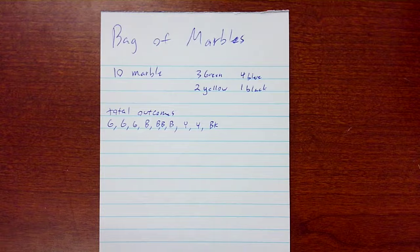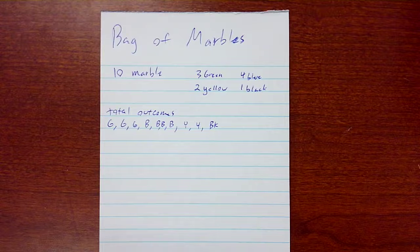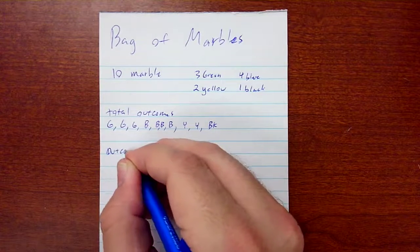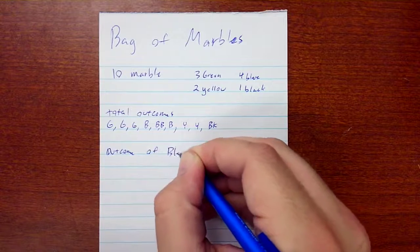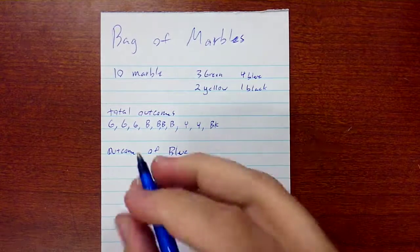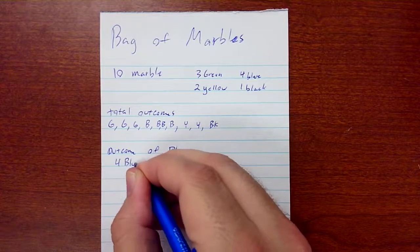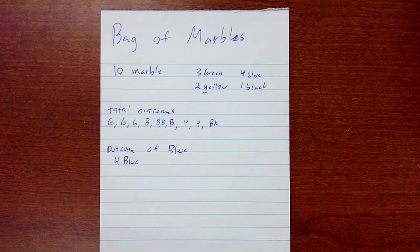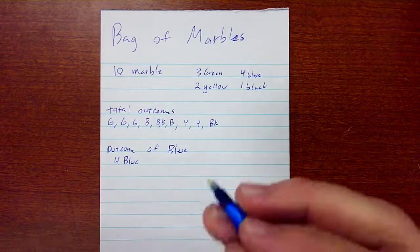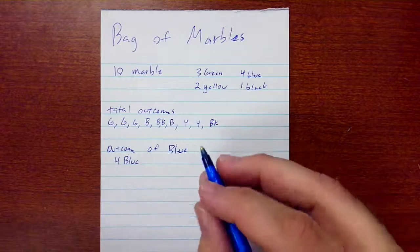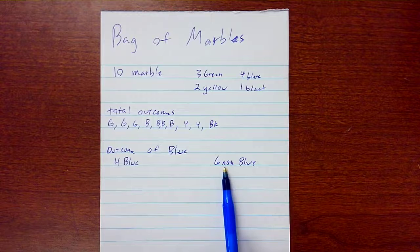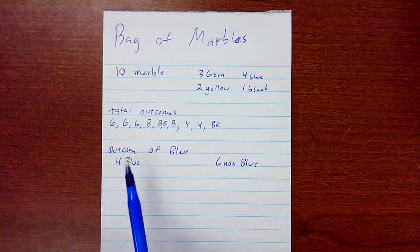Let's look at some favorable and non-favorable outcomes. In how many ways can you choose blue — how can the color blue occur? We have four different blue marbles, so we can draw one of four marbles that's blue. Our non-favorable would be everything else, so we have six non-blue. That would be our non-favorable outcomes, and four blue would be our favorable outcomes for this situation.